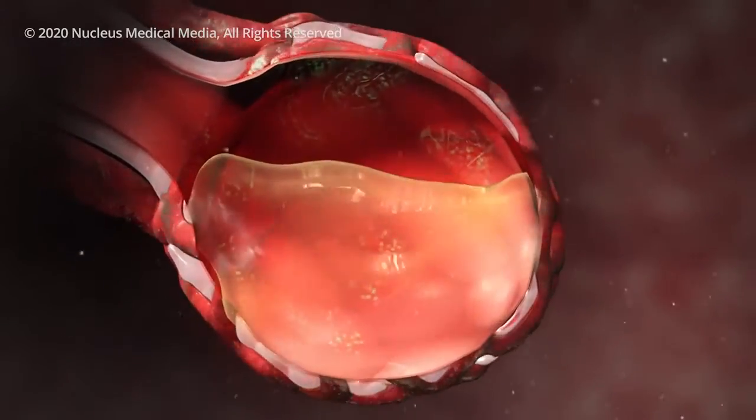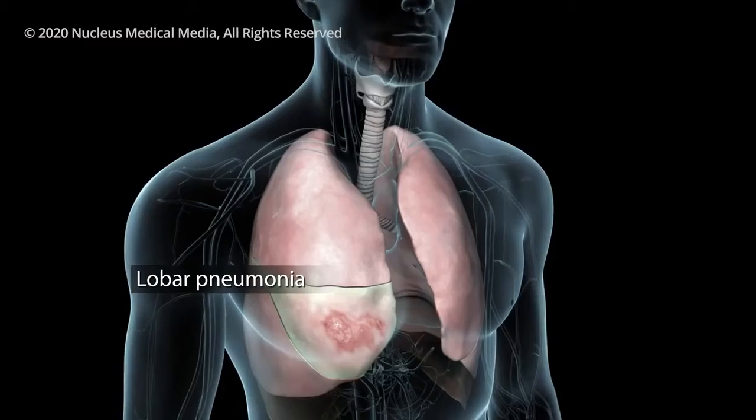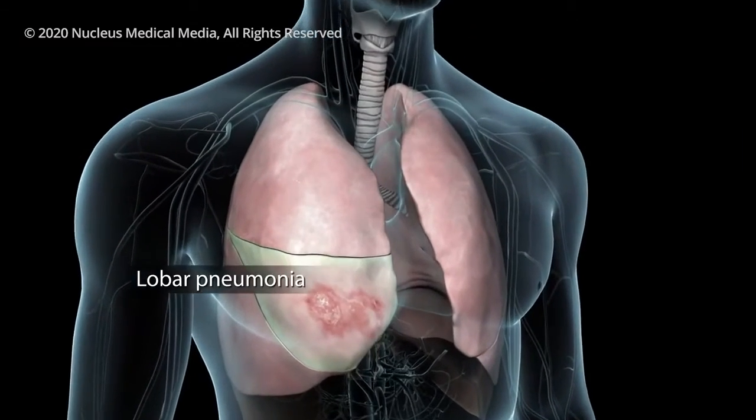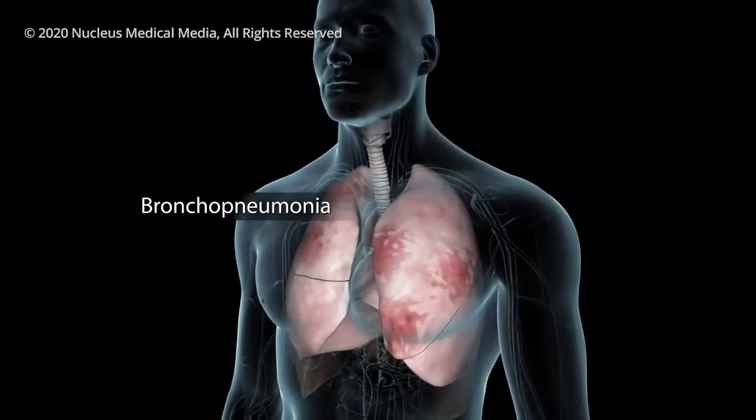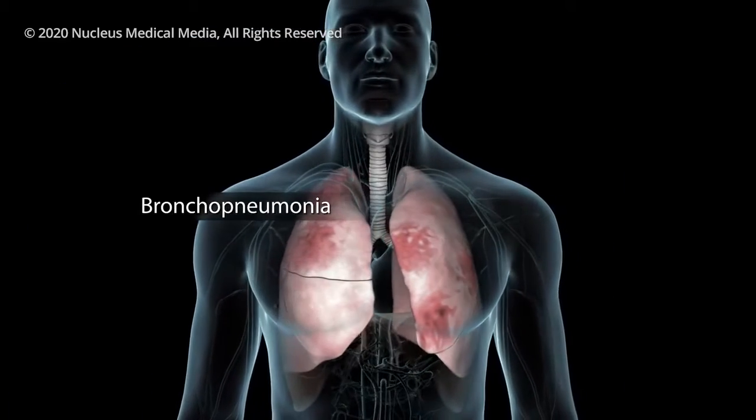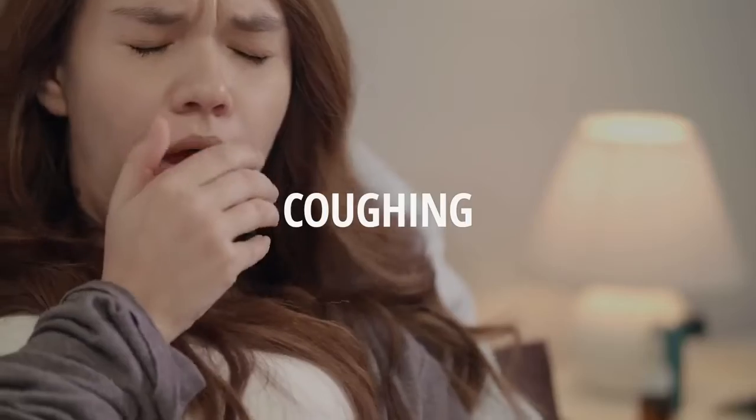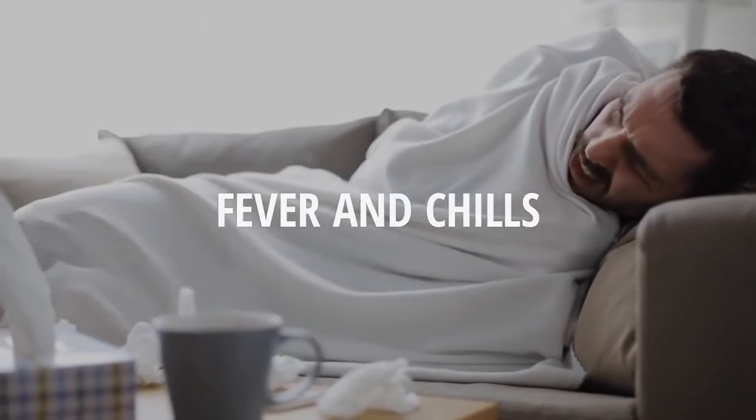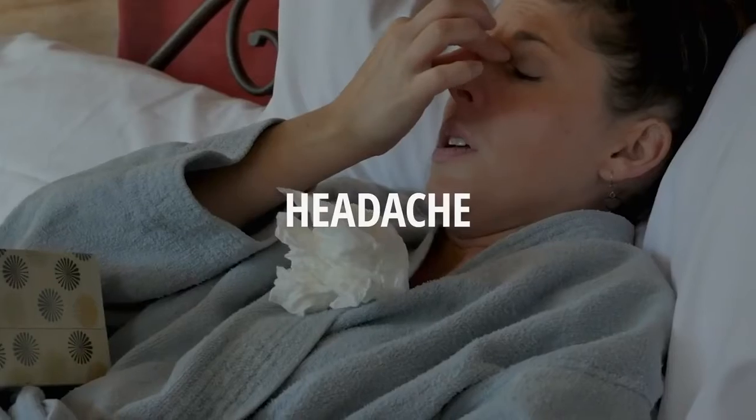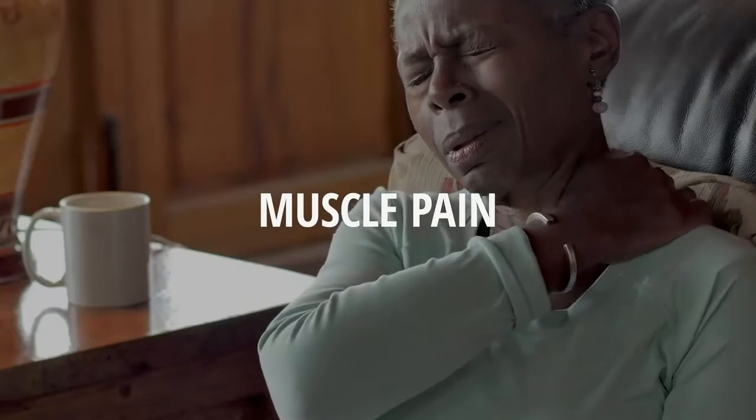You could develop lobar pneumonia, where one lobe of your lungs is affected, or you could have bronchopneumonia that affects many areas of both lungs. Pneumonia may cause difficulty breathing, chest pain, coughing, fever and chills, confusion, headache, muscle pain, and fatigue.